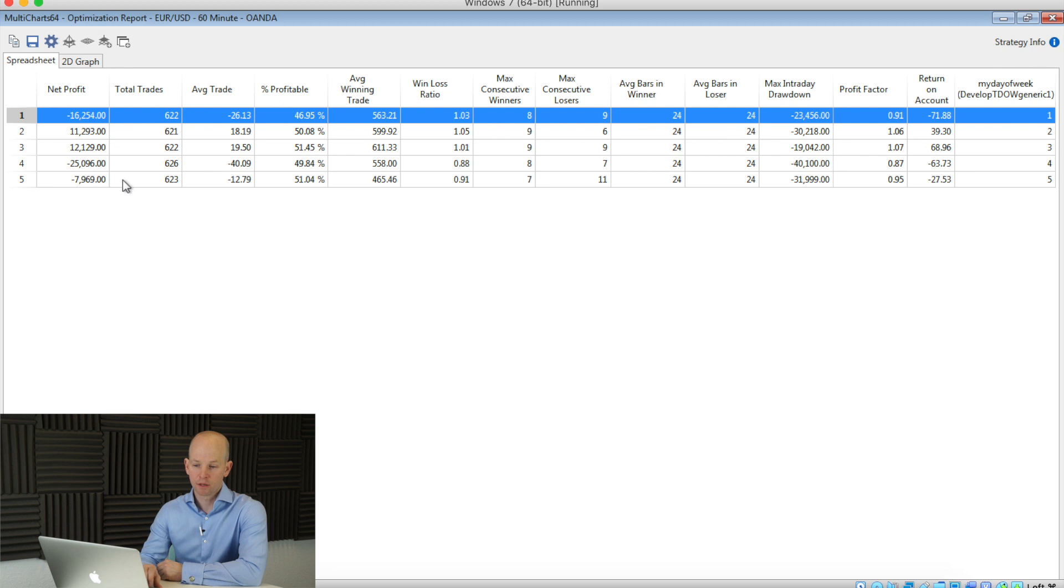So that tells us that for Monday's period it's a negative number so we're going to look for short selling opportunities on the Monday and what I've done with this information is created a bar graph, we'll have a quick look at that one now.